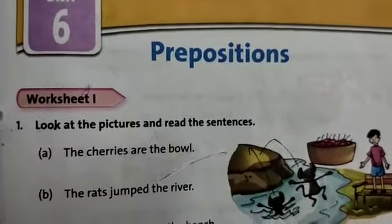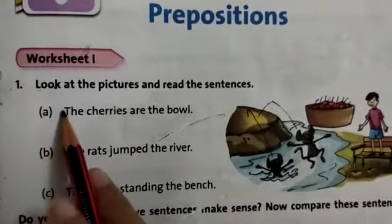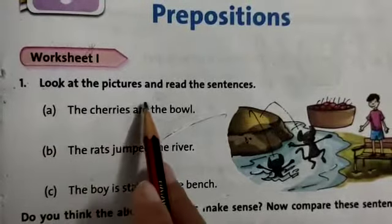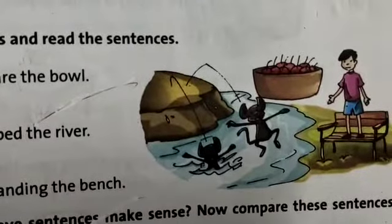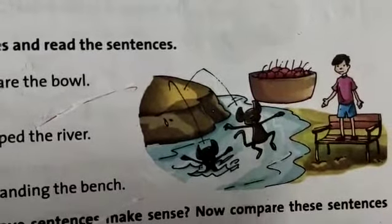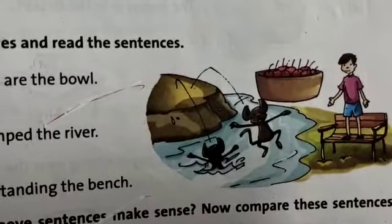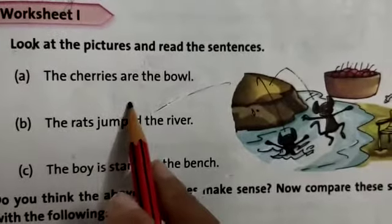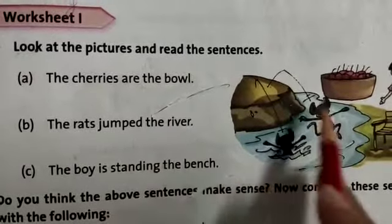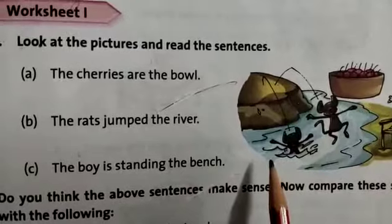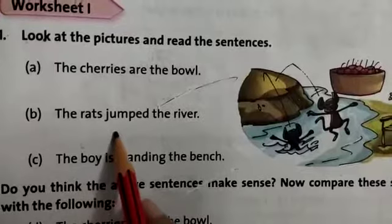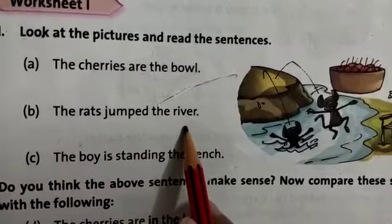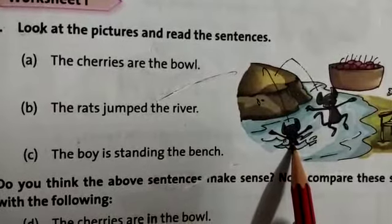Let's start with Worksheet 1. Look at the picture and read the sentence — see what is happening here. Sentence A: The cherries are the ball. Number two: the rats jump the river.